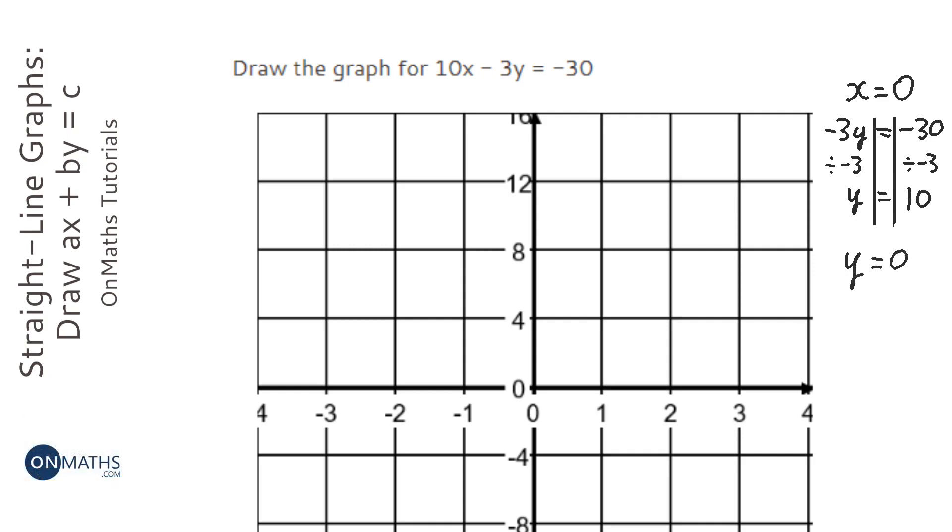So we're going to do the same thing but instead of getting rid of the x, now we're going to get rid of the y. So rewriting the equation that we're given in the question, I'm going to write 10x—I'm not going to write minus 3y because it's equaling 0—equals minus 30. And I'm going to put my lines in and divide both sides by 10, so x equals minus 3.